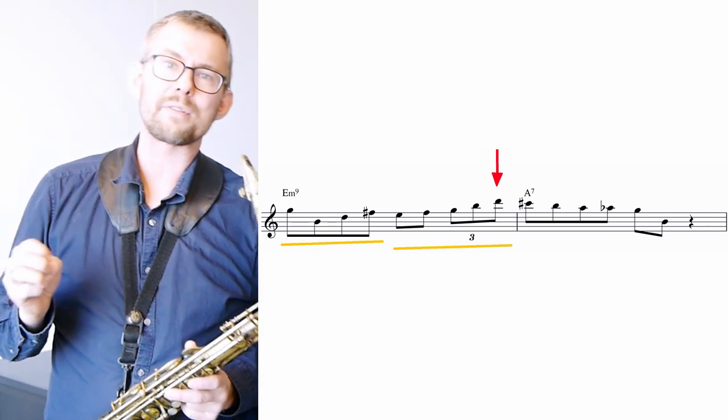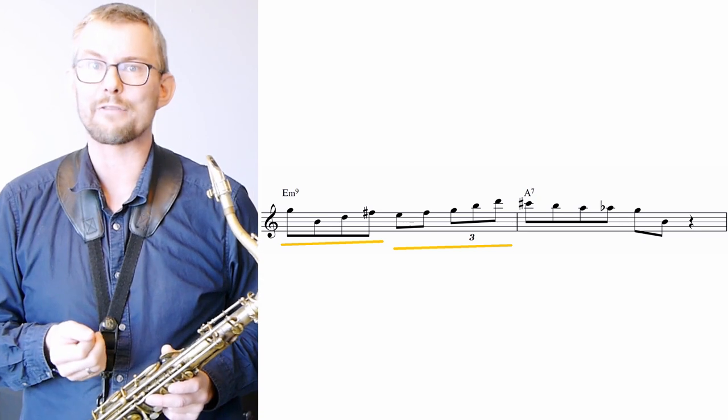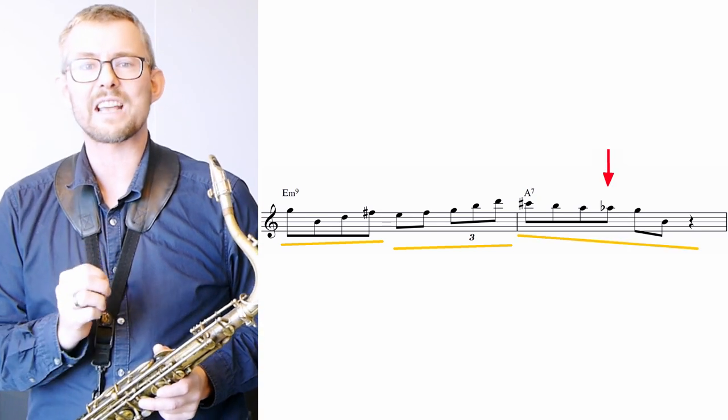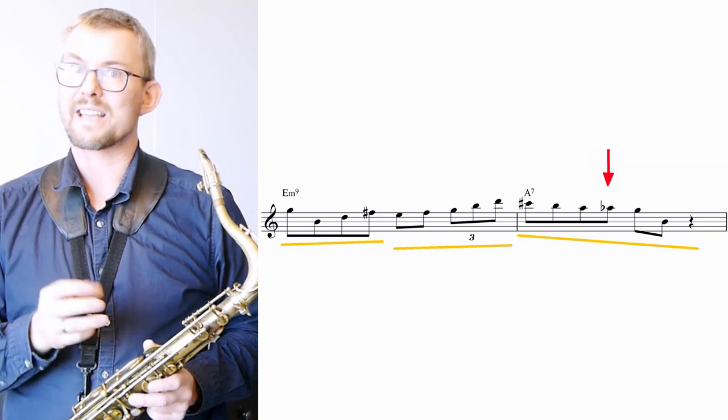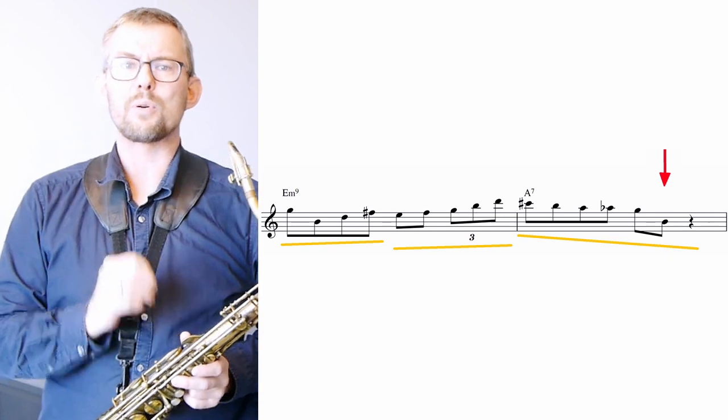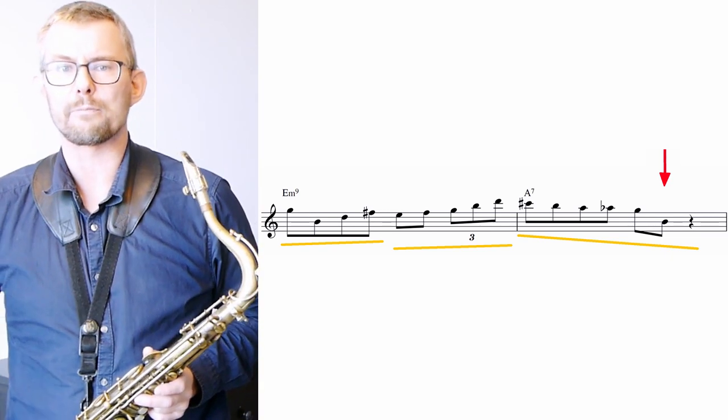The B and the D are surrounding notes of the C sharp of the A7. Here I use the chromatic approach note between the root and the seventh on the dominant chord, in this case the G sharp. The end is also a very clear bebop trade, putting the important notes on the offbeat.